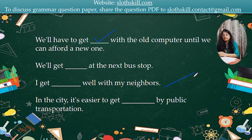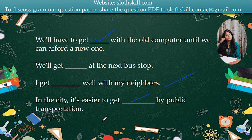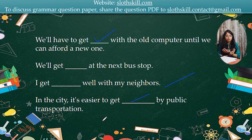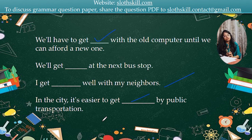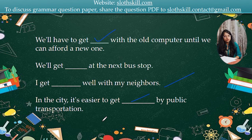In the city, it is easier to get [blank] by public transportation. In the city you have a lot of connectivity, so wherever you want to go it is going to be easier. The answer is get around — I can get around anywhere by public transportation when the connectivity is good.